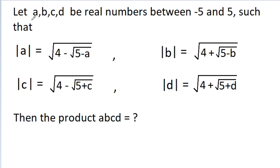In this video, we have given that a, b, c, d are real numbers between minus 5 and 5 such that: mod a equals root under (4 minus root(5 minus a)), mod b equals root under (4 minus root(5 minus b)), mod c equals root under (4 minus root(5 minus c)), and mod d equals root under (4 minus root(5 minus d)). We have to find the product a·b·c·d.